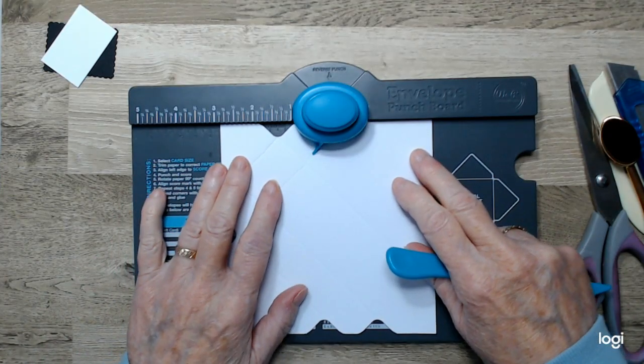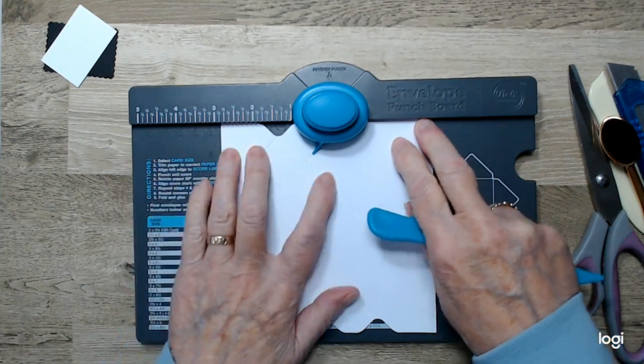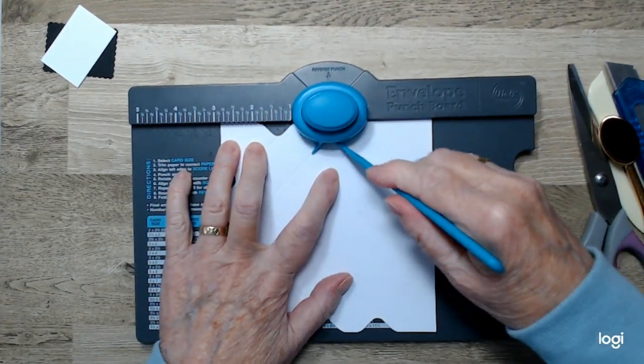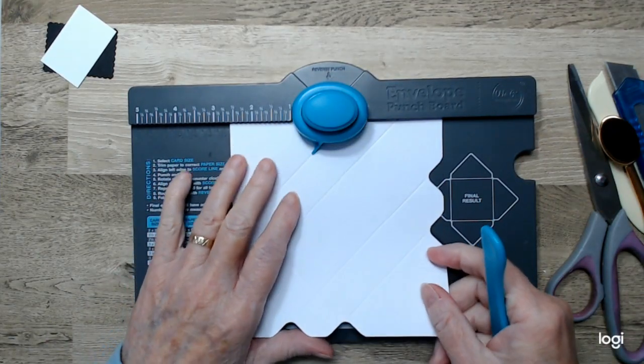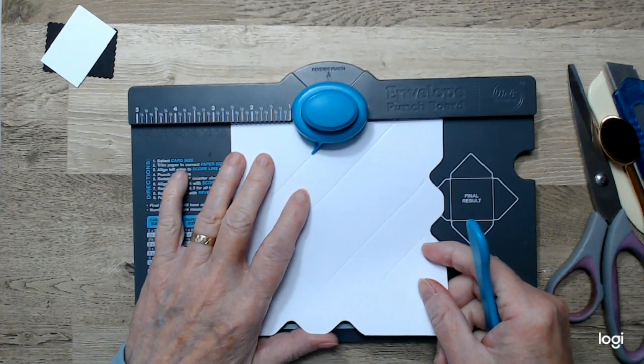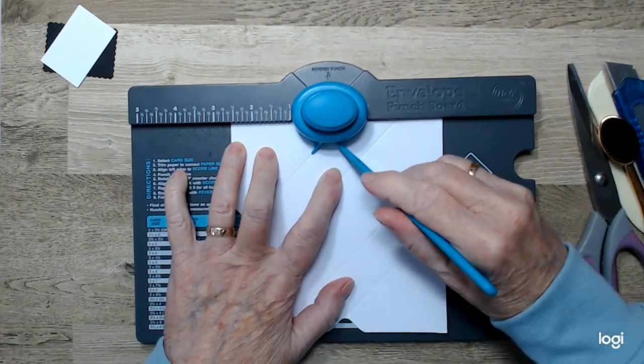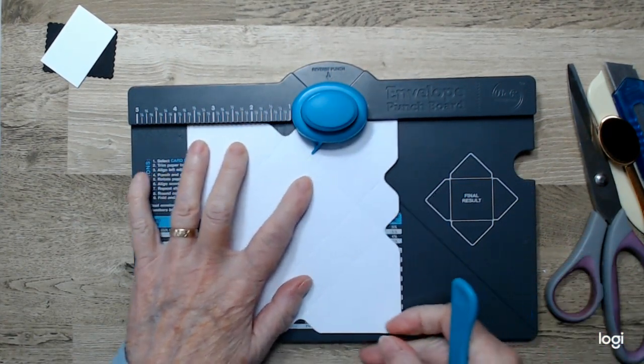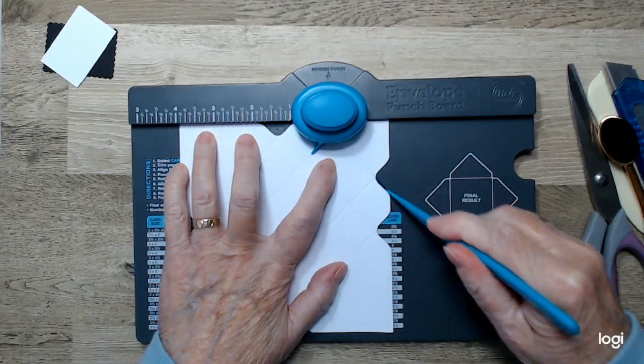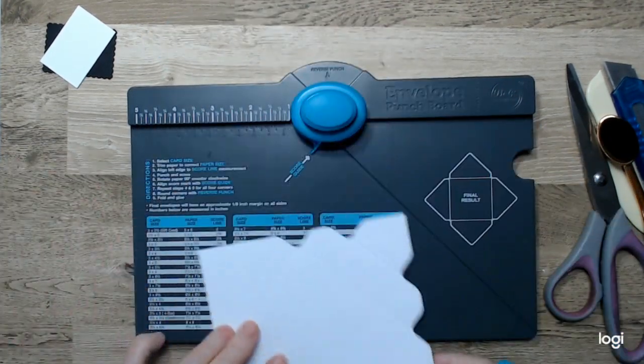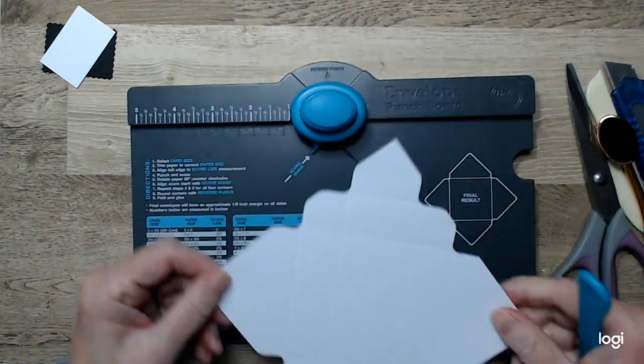On all four sides. Just make sure you get up right into that point. Where am I now. I'm not concentrating. That's what I'm doing. So line it up there. Punch. Score. And keep it going. I have missed using this punch board.